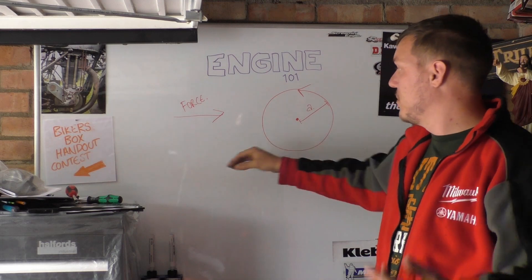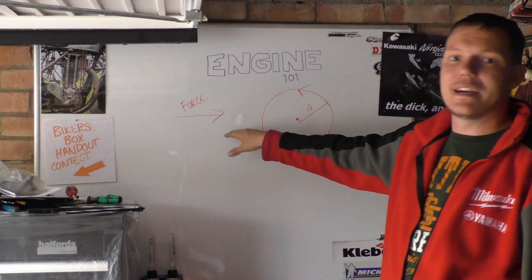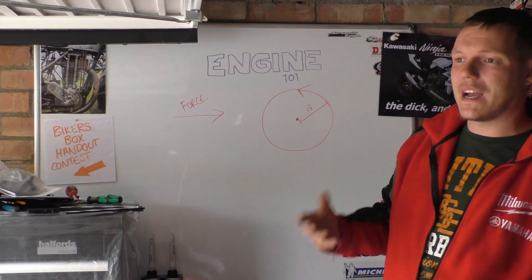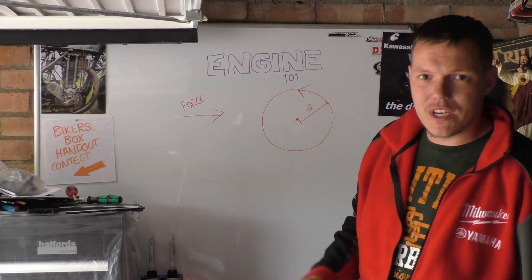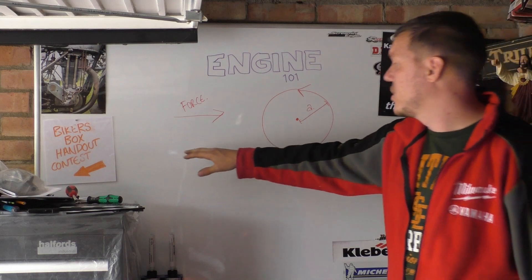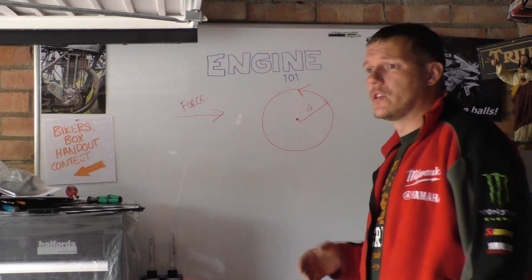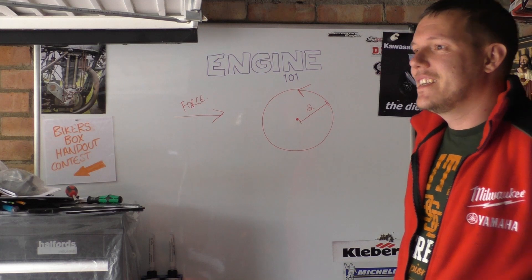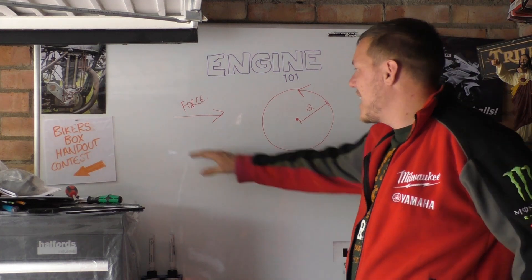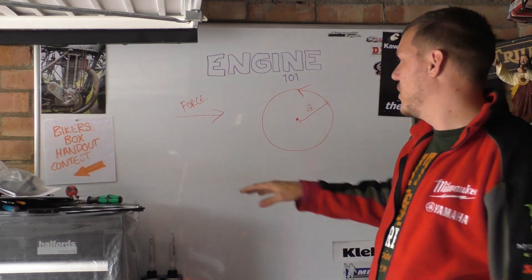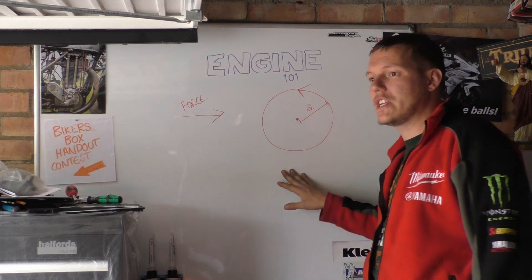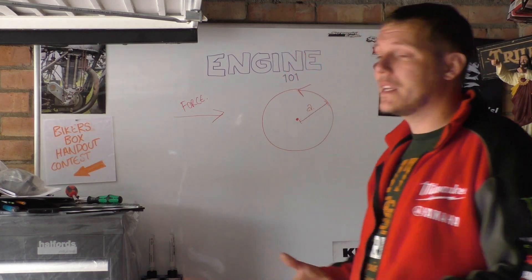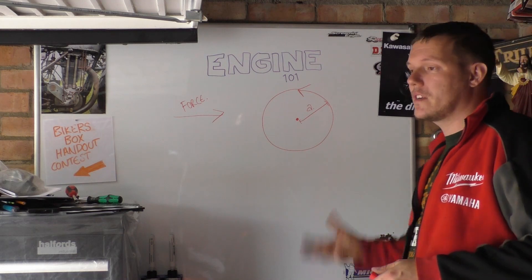So we have a problem: we've got a linear vector — a straight line, a linear force that we can create somehow — and a rotation, and we need to convert one to the other. What we need is a linear actuator that will convert linear motion into rotational motion. And we use a piston, a con rod, and a crankshaft.